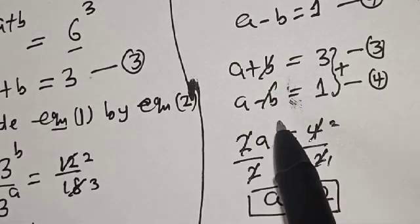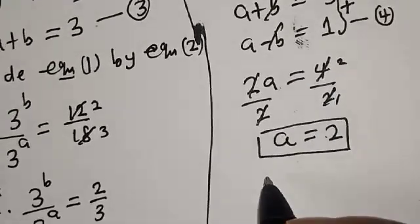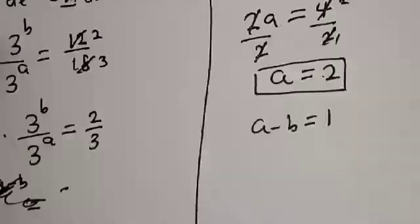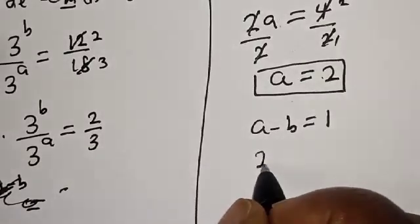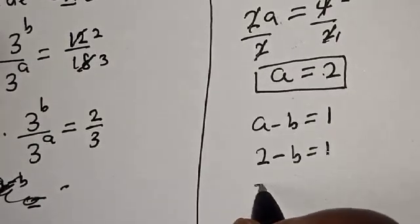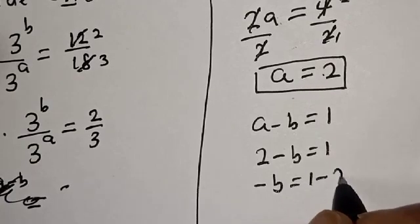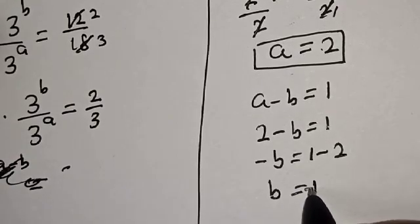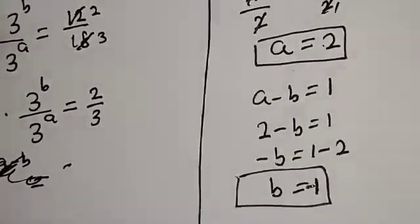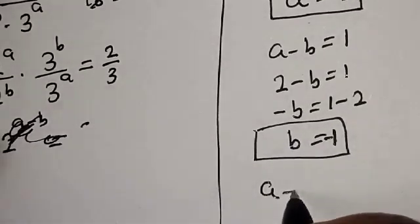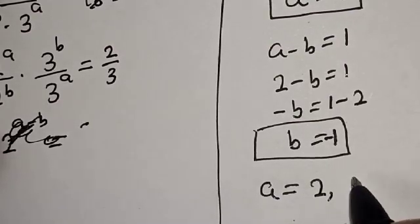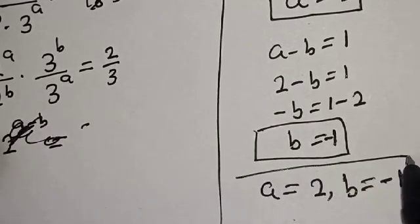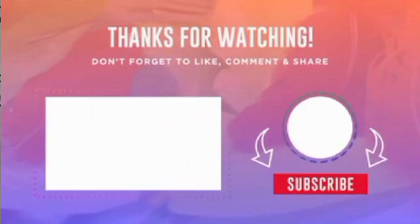We've gotten the value of A. Let's substitute A into equation 4 to get the value of B. Equation 4 is A minus B equals 1, and A equals 2, so 2 minus B equals 1, then minus B equals 1 minus 2, giving B equals negative 1. Therefore our final answer is A equals 2 and B equals negative 1. If you enjoyed the class, please don't forget to like, share, comment and subscribe. Thank you.